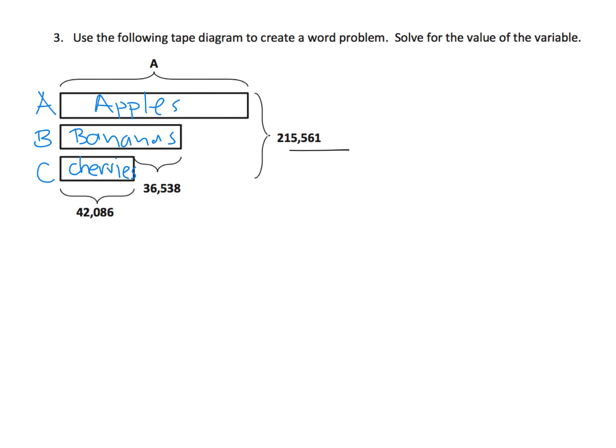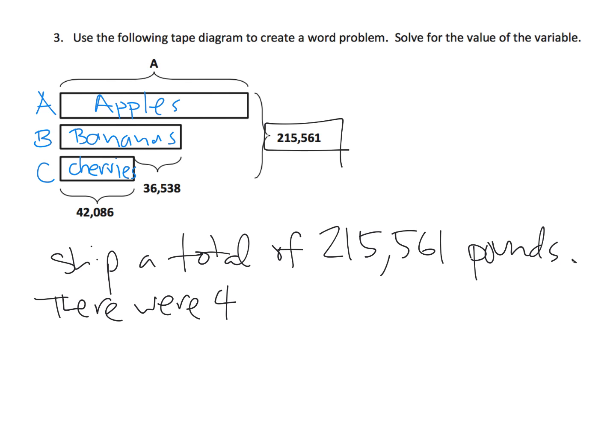So let's say the shipping company, we ship a total of 215,561 pounds of fruit. And then we could say there were 42,086 pounds of cherries. And I'm just going to put a C. And there were, now how many pounds of bananas? Well, if we've decided that cherries is 42,086 pounds of cherries, are there 36,538 pounds of bananas?